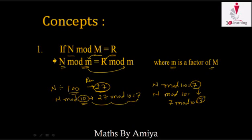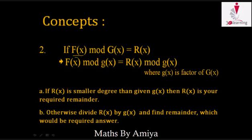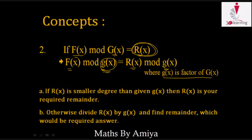Now check this concept for functions. When a function f(x) — I am writing the function in a capital letter just to understand that g(x) is the factor of capital G(x) — if f(x) divided by G(x) gives remainder r(x), then f(x) divided by g(x) gives remainder r(x) divided by the new divisor, if g(x) is a factor of capital G(x). If the degree of r(x) is smaller than the degree of g(x), then r(x) is the remainder. If r(x) has a bigger degree than g(x), we have to divide again.